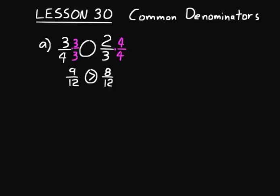Did you see what we did to get common denominators? We multiplied each fraction by a fraction equal to 1 — on the left, 3/3, and on the right, 4/4 — and got a common denominator of 12. That common denominator, 12, is the least common multiple of 4 and 3. Think about it: multiples of 3 are 3, 6, 9, 12; multiples of 4 are 4, 8, 12. The least common multiple is the lowest multiple they share in common, and 12 is the one. That's what you do when trying to get common denominators — figure out the least common multiple.